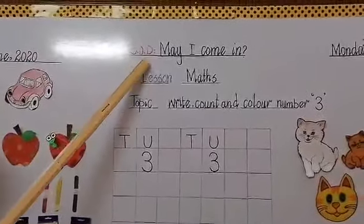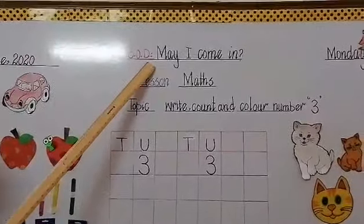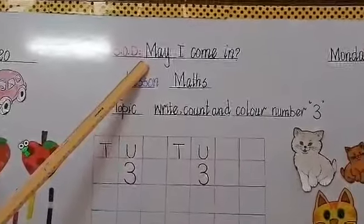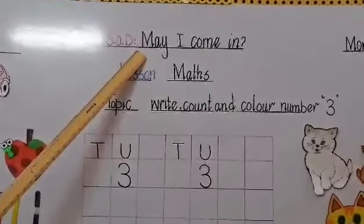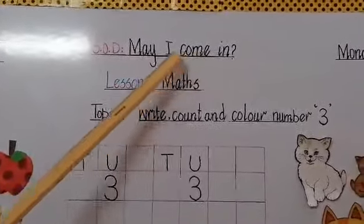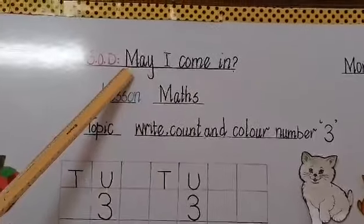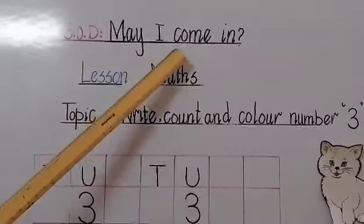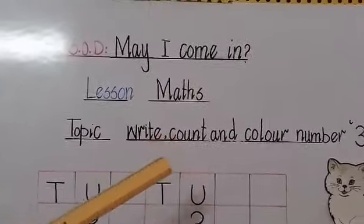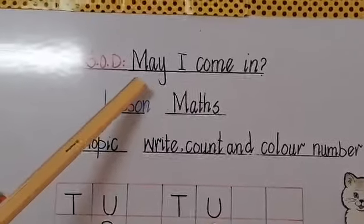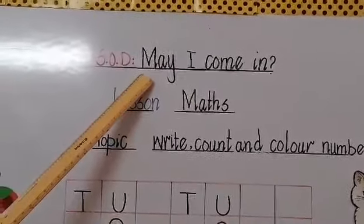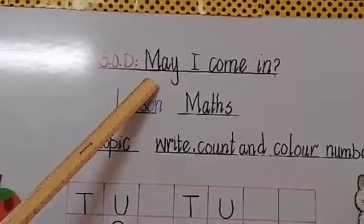Today we are going to learn a new sentence and you people have to read it with me. Say after me loudly: May I come in? What is the sentence of today? May I come in? Whenever you people have to enter a room, you have to take permission and say it loudly: May I come in? And then you will enter the room.